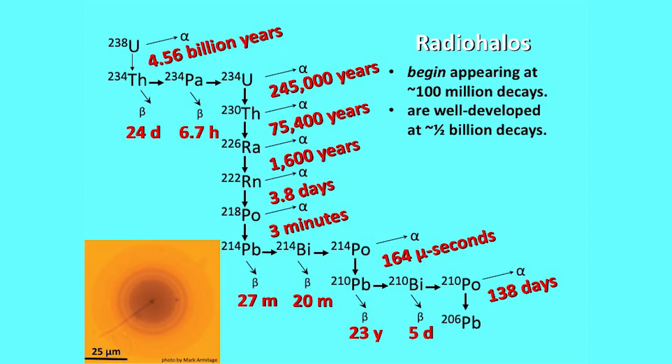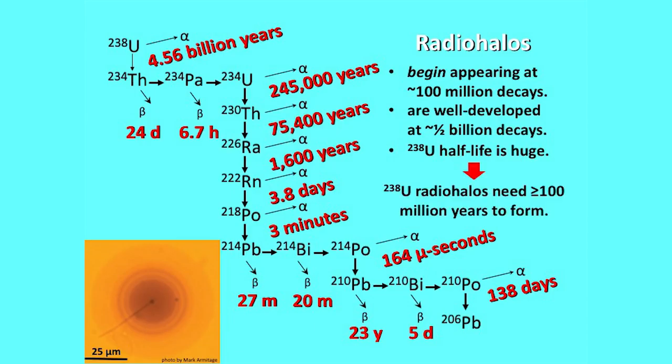Looking back at uranium-238, it's got a huge half-life. Since you need half a billion decays to produce a complete mature uranium halo, this has to be old. You're going to need over a hundred million years of decay to begin to develop that uranium halo so that you can identify it — at today's rates.